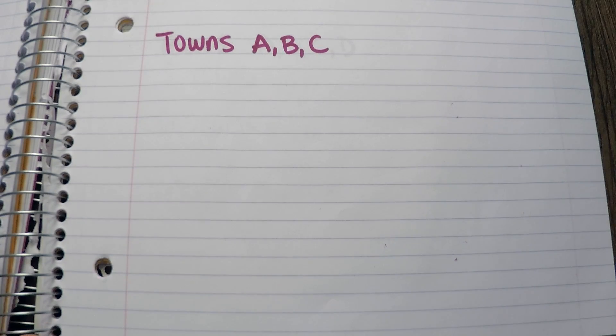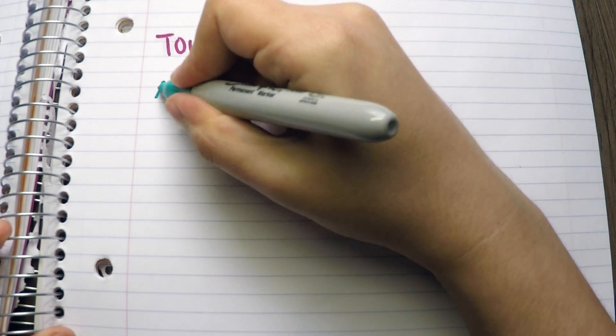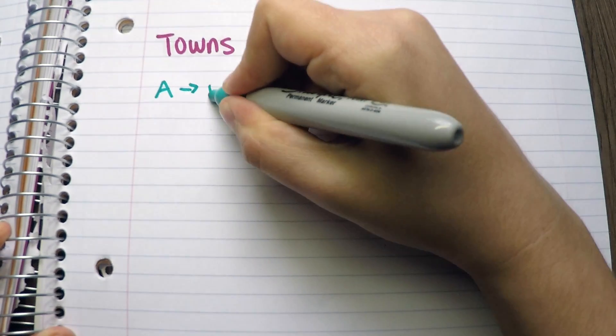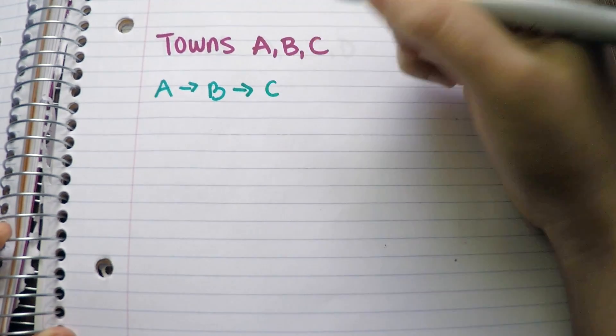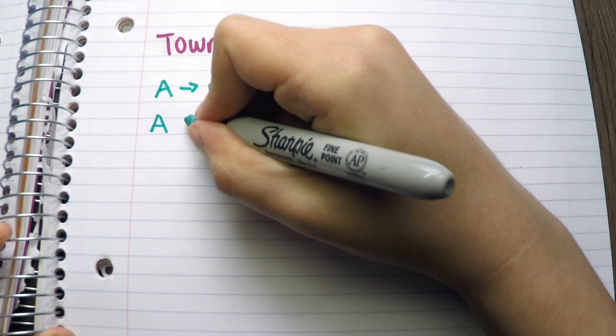For simplicity, let's say we have three towns and we call them A, B, and C. One option would be going to A, then B, and then C. Or he could do A, C, and B.